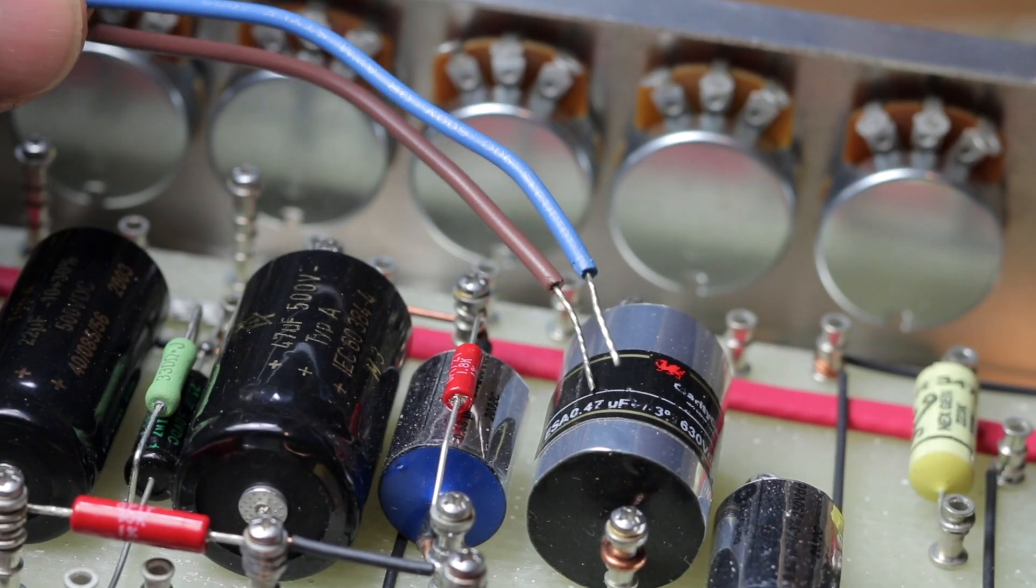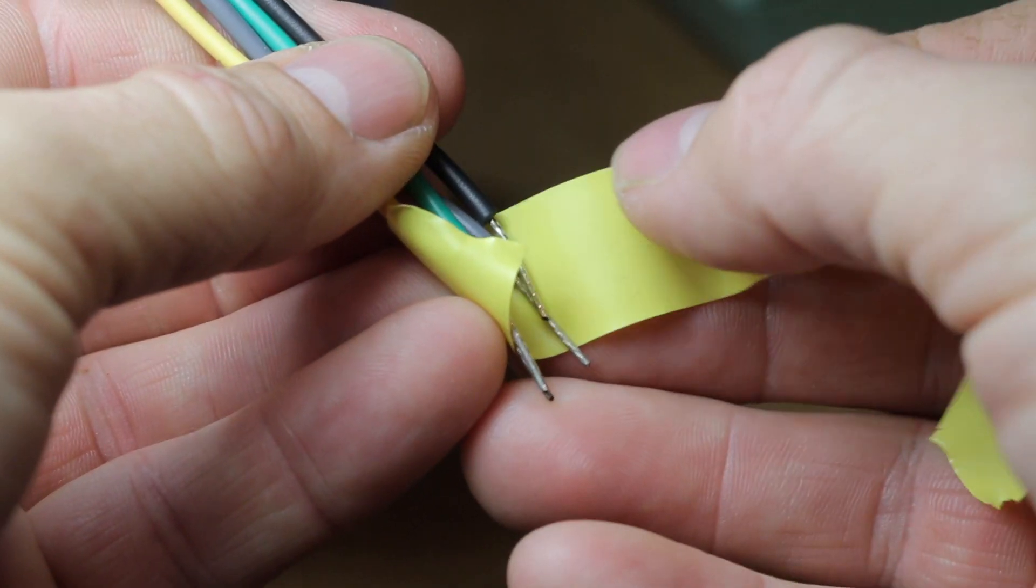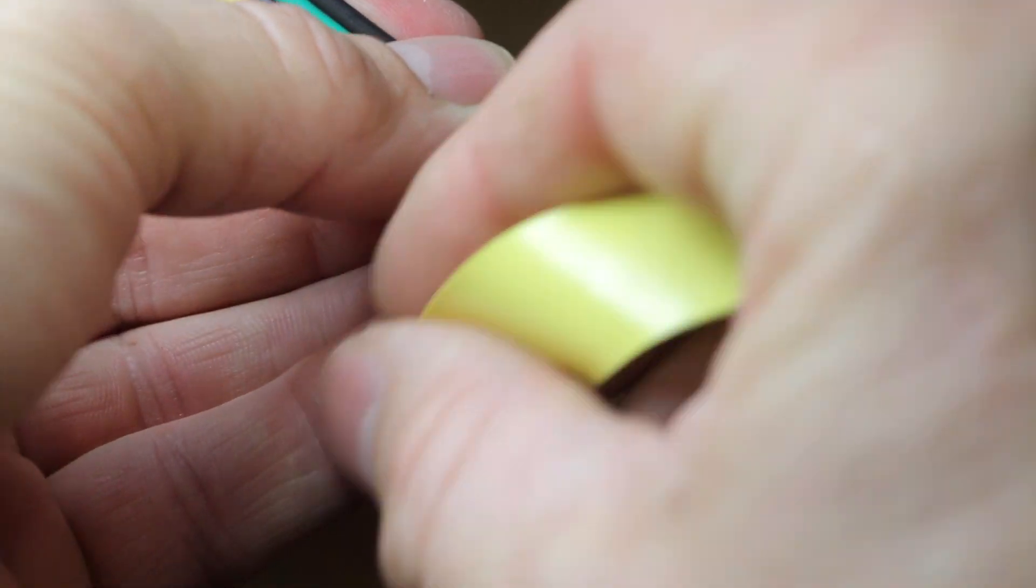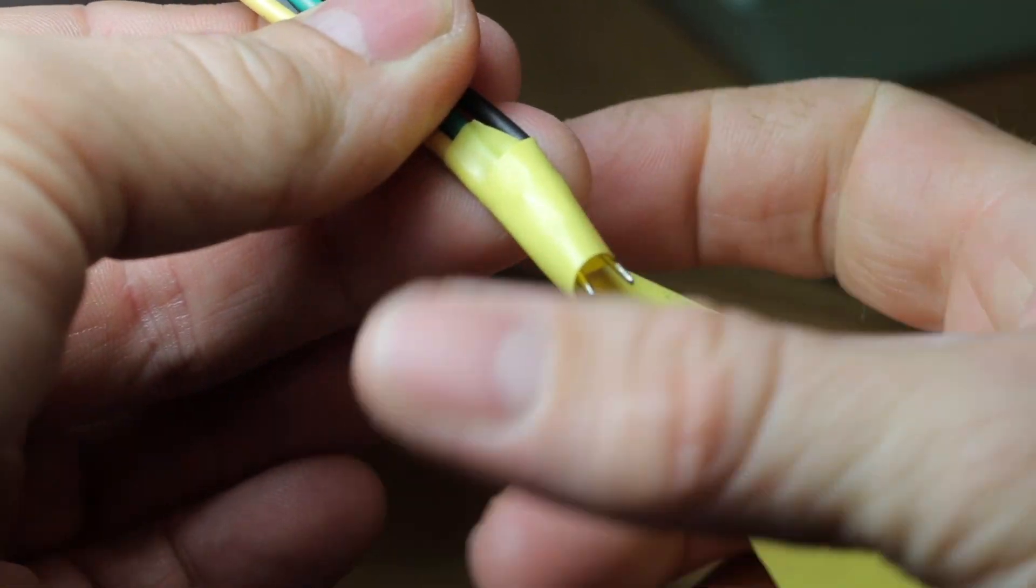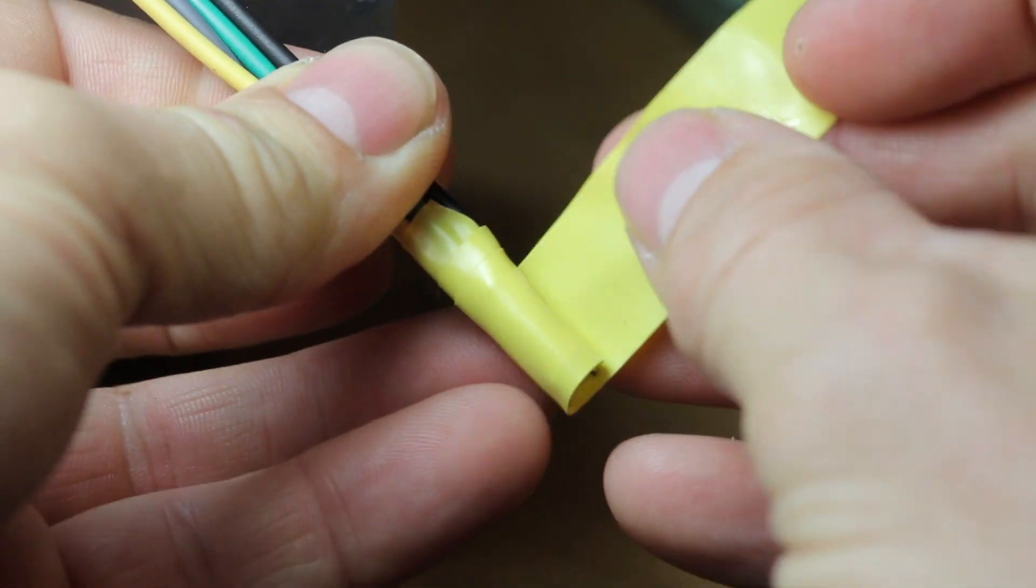I find the sharp ends of the transformer cables incredibly irritating. They scratch both components and the chassis, and so I wrap them with a little bit of insulation tape.